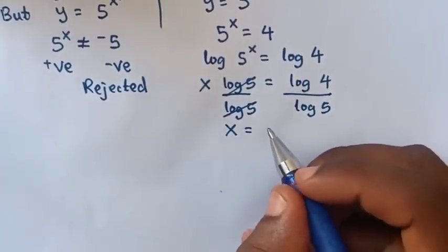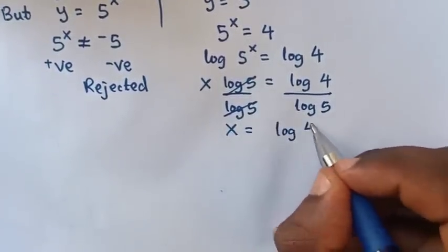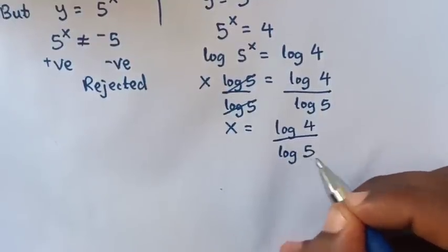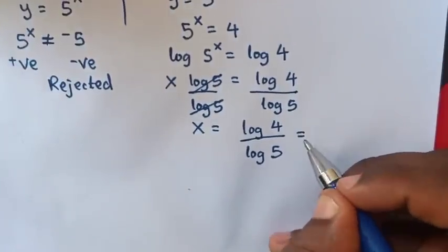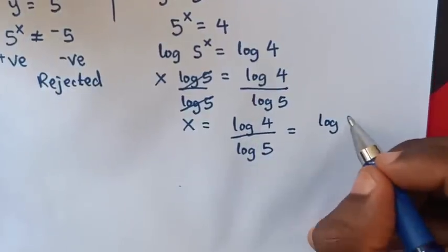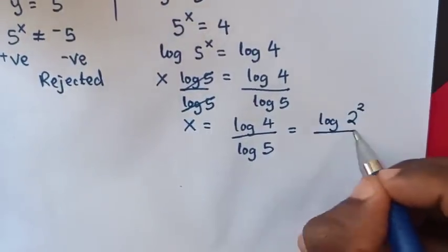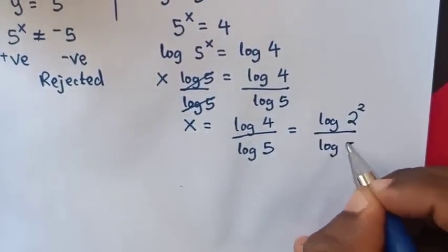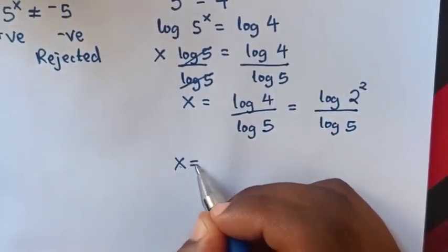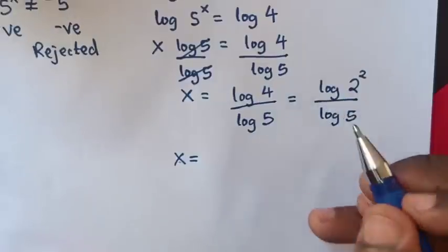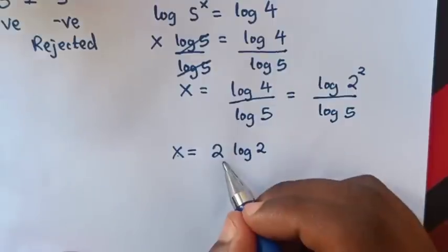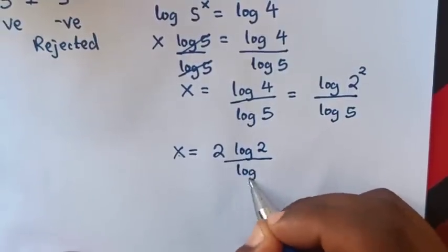So x equals log 4 over log 5. Since 4 is 2 squared, log 4 equals log of 2 power 2. The power 2 moves to the front, giving x equals 2 log 2 over log 5.